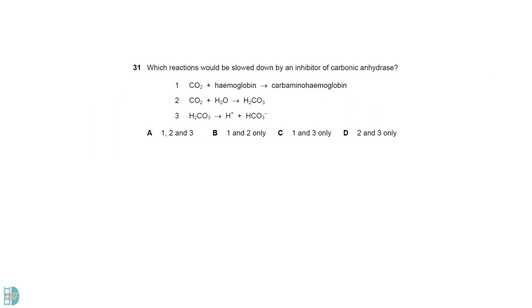Carbonic anhydrase catalyzes the formation of carbonic acid from carbon dioxide and water, then its dissociation into proton and bicarbonate ions. So its inhibitor would affect 2 and 3.